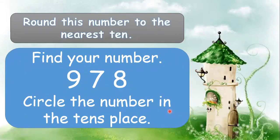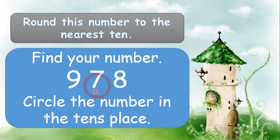Round this number to the nearest ten. The given number is 978. Find your number — circle the number in the tens place. The number which is in the tens place is number seven.